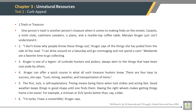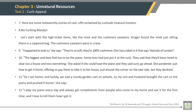First sentence of paragraph 4: Cruger can offer a quick course in what all such treasure hunters know. First sentence of paragraph 5: The first leg is self-explanatory. First sentence of paragraph 6: 'I am lucky. I have a convertible,' Cruger says. First sentence of paragraph 9: 'It happened to look in,' she says. 'They are so soft. They are 100% cashmere.'